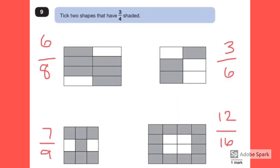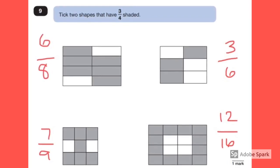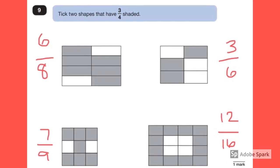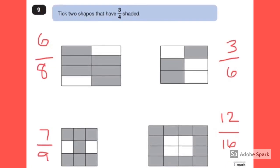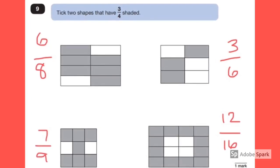If we repeat this for all of the shapes, you'll find that on the top right we have three sixths, because the shape is split into six pieces with three coloured in. The bottom left is seven ninths and the bottom right is twelve sixteenths.